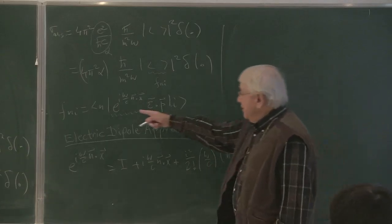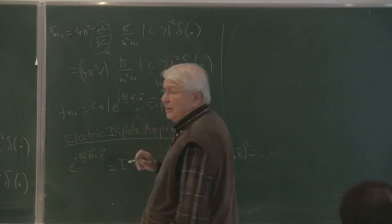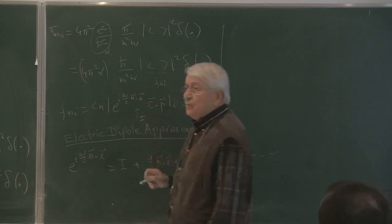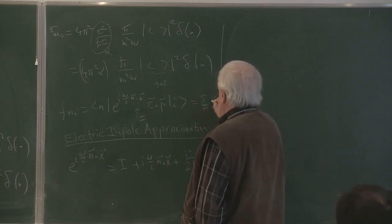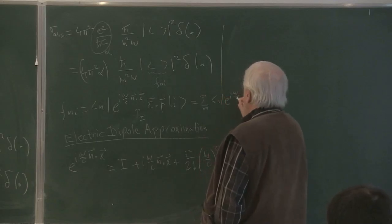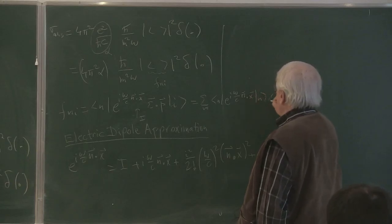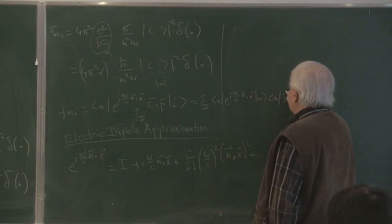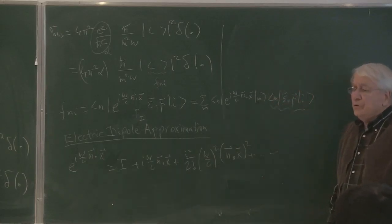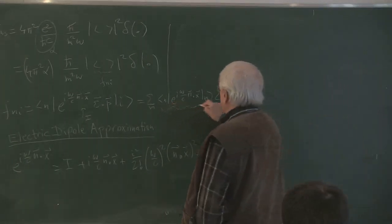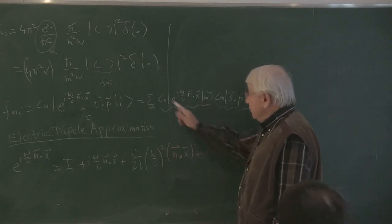So when you are computing this, in order to see how we work this out, let's insert here an identity. The identity is the completeness sum — say, |m><m|. So if I write it as |n> e^{i(omega/c)(n·x)} |m><m| (epsilon·p) |i>, this portion we cannot do much with; we are going to retain it. But in this factor, we have that infinite series sandwiched between n and m.